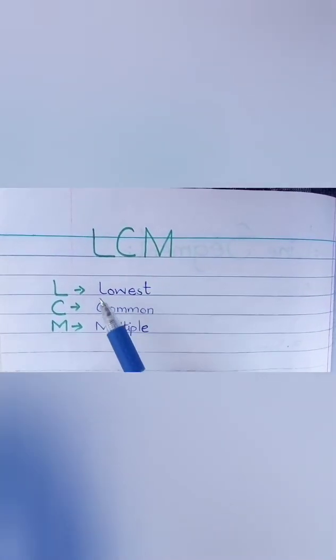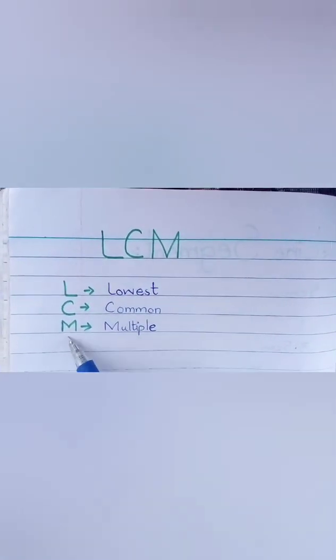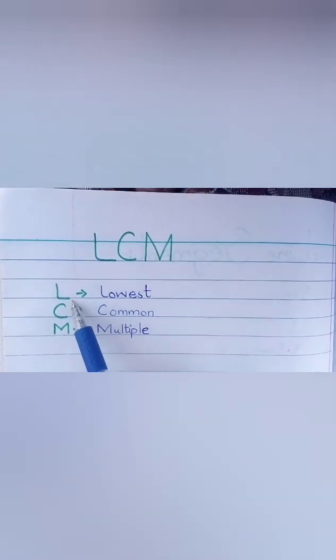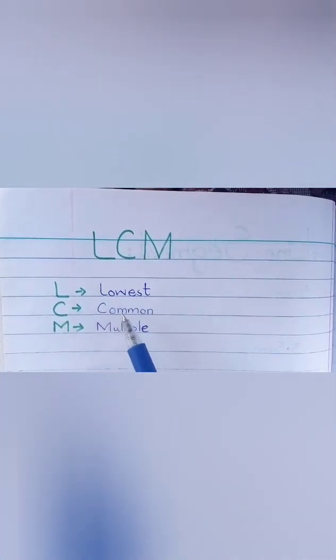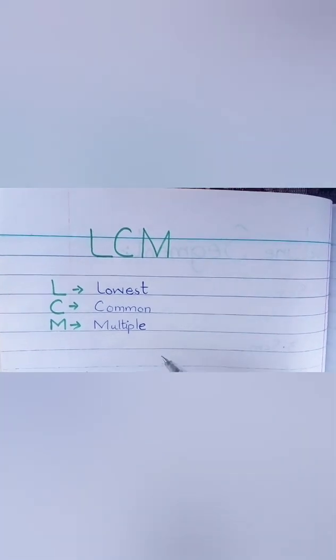LCM stands for: L stands for lowest, C stands for common, M for multiple. Lowest means chota, common means jo sab mein present ho, woh number jo sab mein present ho.